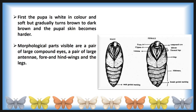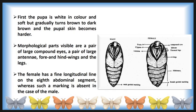Morphological parts visible in the pupal stage include: a pair of large compound eyes, a pair of large antennae, fore and hind wings, and legs. The female pupa has a fine longitudinal line on the 8th abdominal segment, whereas such a marking is absent in the male.